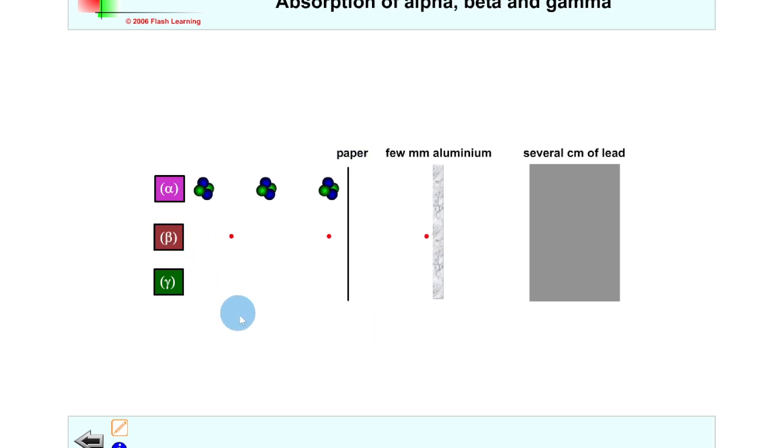For beta particles, these are coming in, these fast moving electrons, and they're passing through the paper, but they're being absorbed by the few millimeters of aluminium.